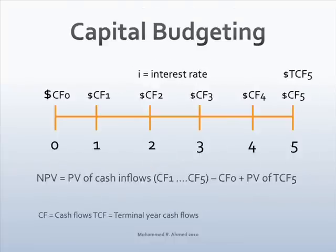The investment in the project is made at period 0 and the cash flows will be received at a future date. In capital budgeting analysis, all future cash flows — CF1, CF2, CF3, CF4, CF5 — and terminal year cash flows for year 5 are brought to today's value by computing the present value of the cash flows. The difference between the present value of the cash flows and the initial investment is referred to as net present value. If the present value of future cash flows from the project is greater than the initial investment, the net present value is positive and the project is profitable.